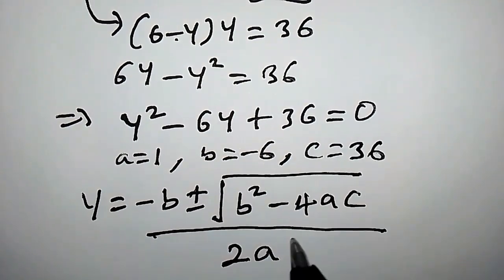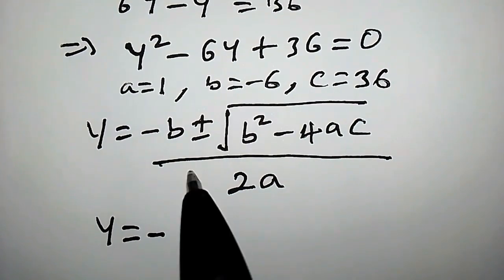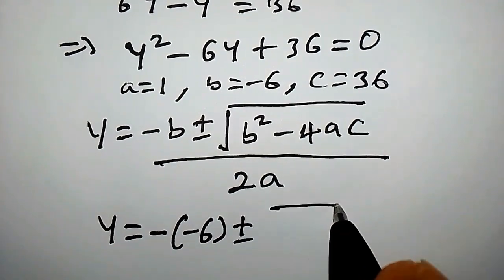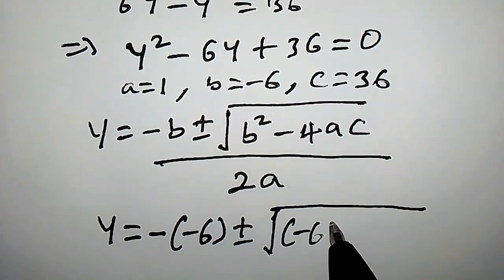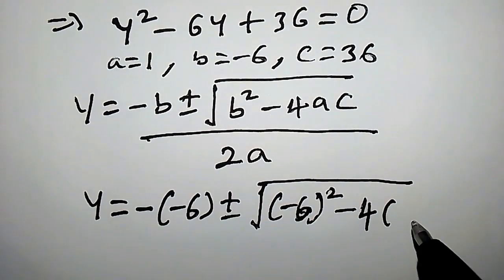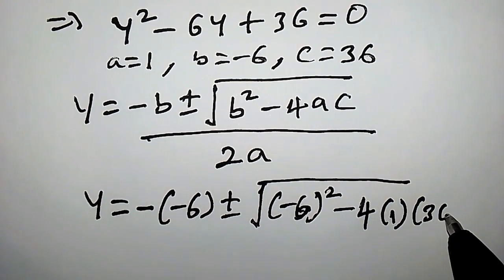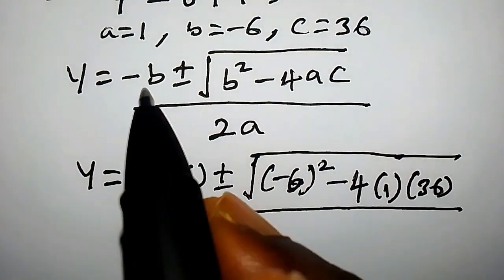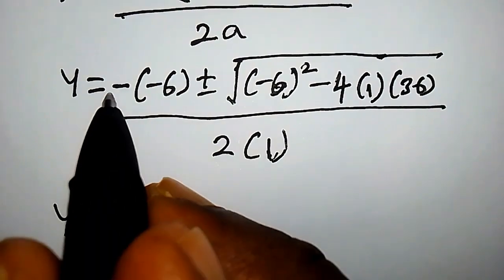And c is equal to 36, the constant. Let's continue. y is equal to minus b, where b is minus 6, so we have minus of minus 6, plus or minus square root of b squared — that is minus 6 squared — minus 4 times a times c, which is 4 times 1 times 36, everything divided by 2 times a, which is 1.